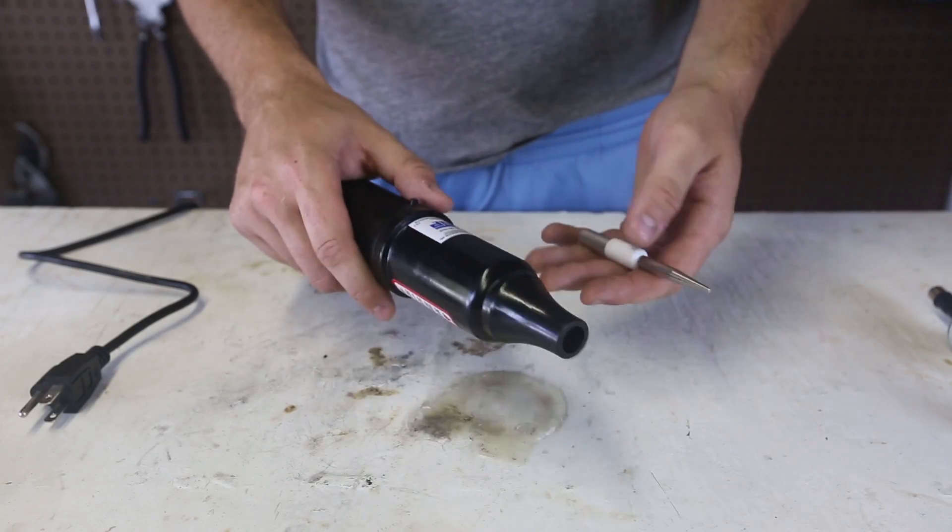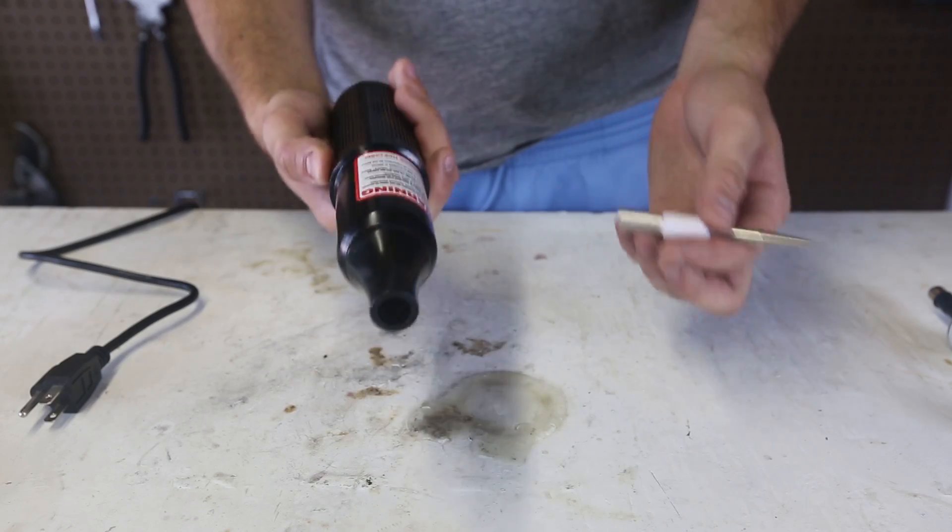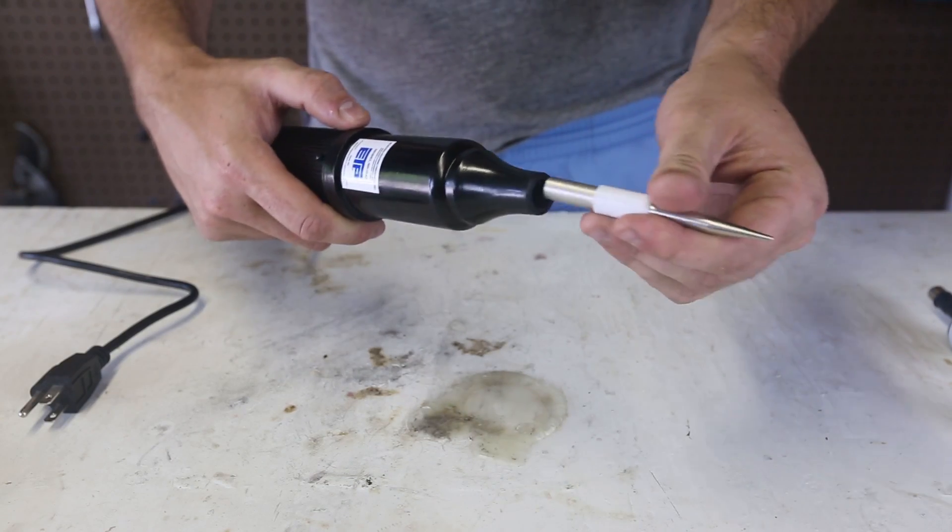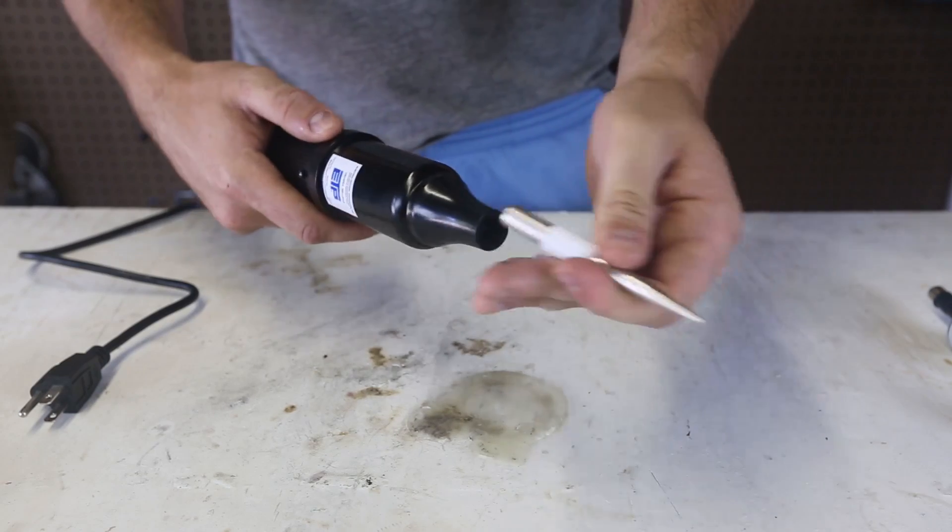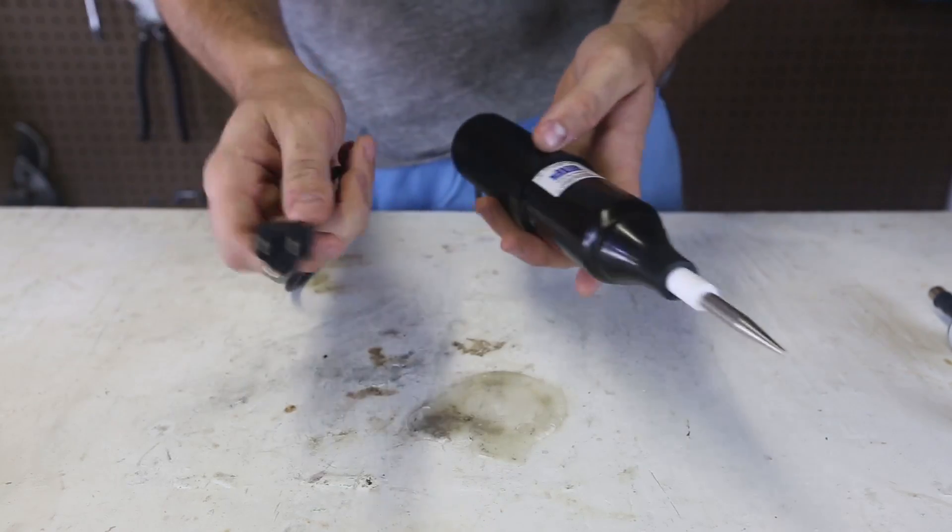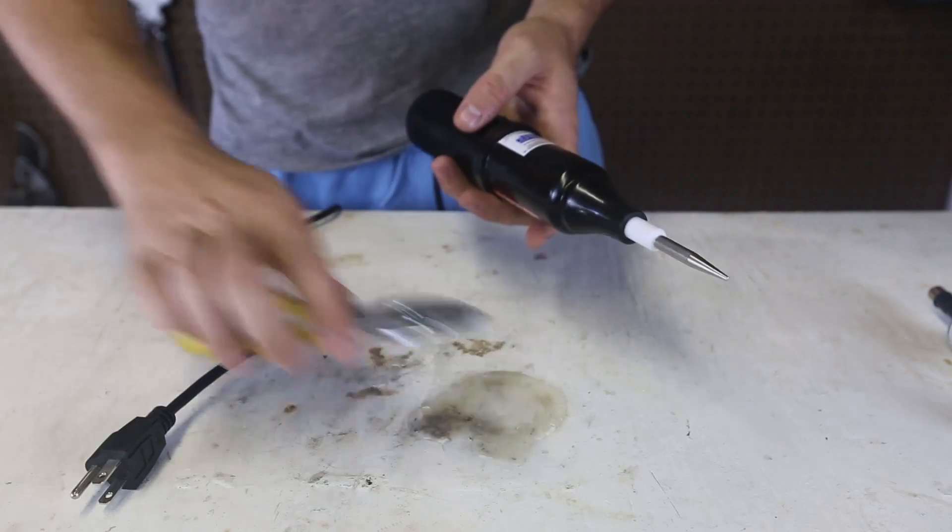So I got here Udin coil or Tesla coil, it's a high voltage coil, goes up to between 20,000 to 50,000 volts. There is a little attachment that goes into it, so we're going to plug it in and I'll show you what it does.